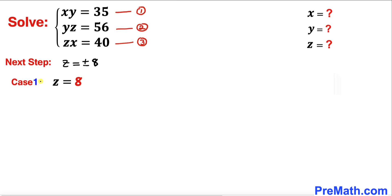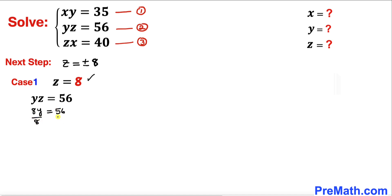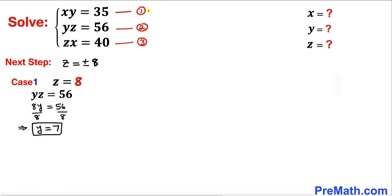Let's focus on case 1 first, when z equals positive 8. Using equation 2, which is yz equals 56, let's plug in z equals 8. That gives us 8y equals 56. Dividing both sides by 8 to isolate y, our y value turns out to be 7.